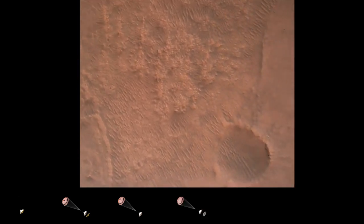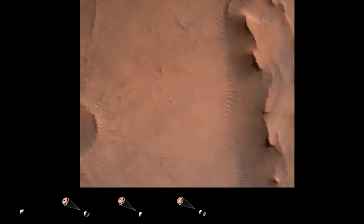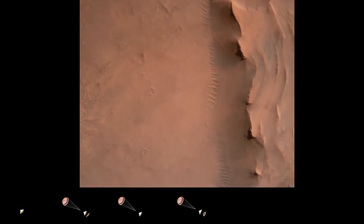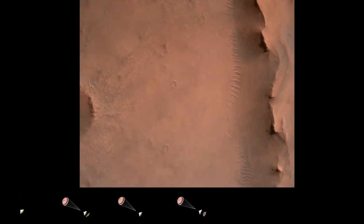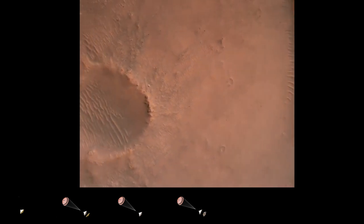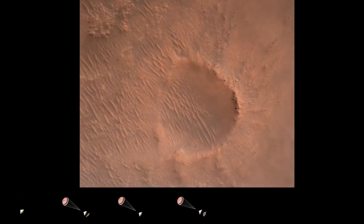Backshell separated. Current velocity is 83 meters per second at about 2.6 kilometers from the surface of Mars. We have confirmation that the backshell has separated. We are currently performing the divert maneuver.